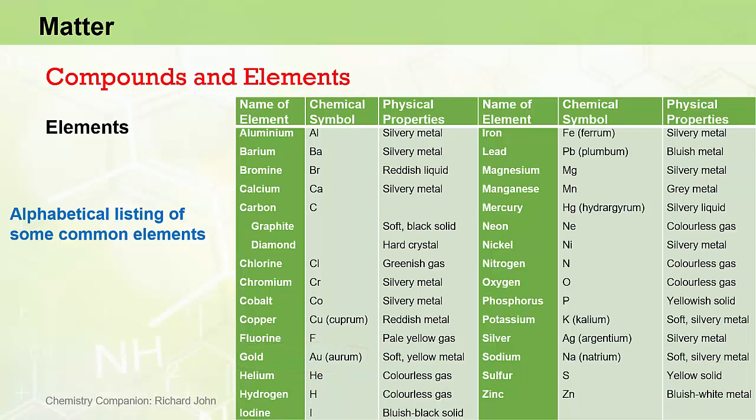In this table, the elements are listed alphabetically and these are some of the more common elements that you will come across in your chemistry studies. Being substances, these elements have a unique set of physical and chemical properties and you can see some of the readily observable physical properties in these columns of the table.